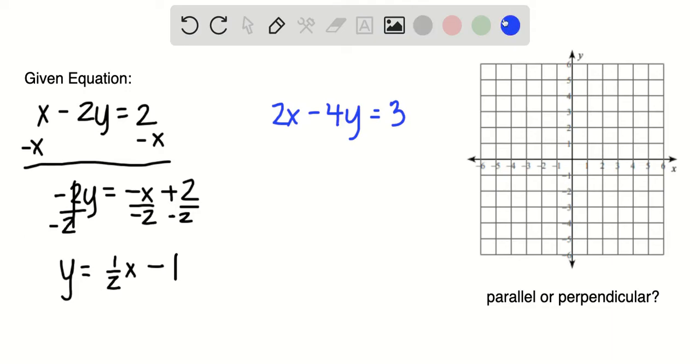For the next equation I have 2x minus 4y is equal to 3. Again I'm going to put this in slope intercept form before we start to graph. So I'm going to subtract 2x from both sides.